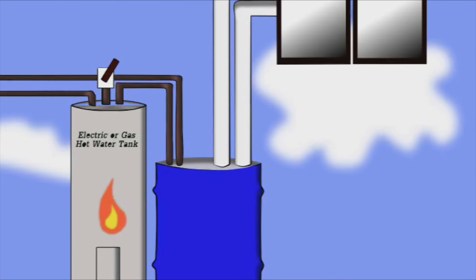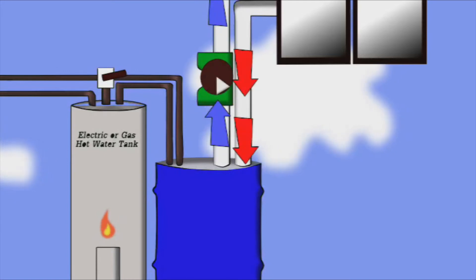Next, we install the valves so you can shut off the solar equipment if needed. Finally, we install an active pump that circulates the water through your collector.